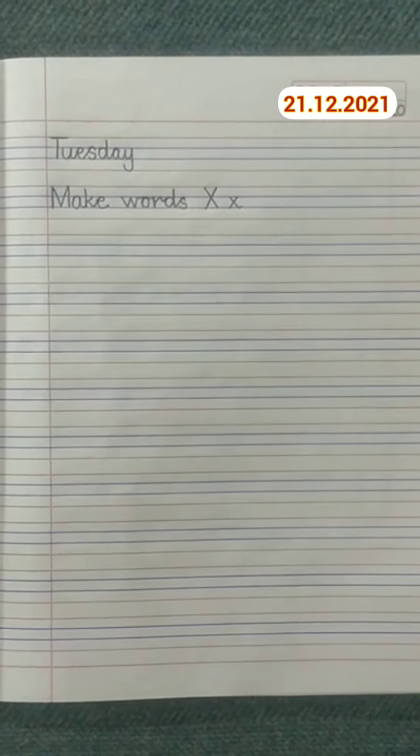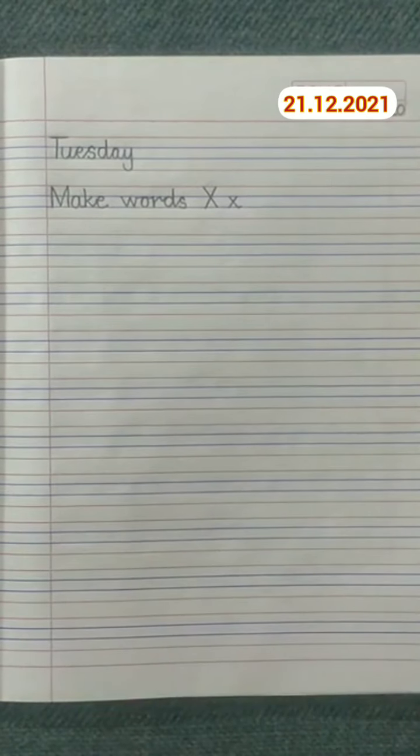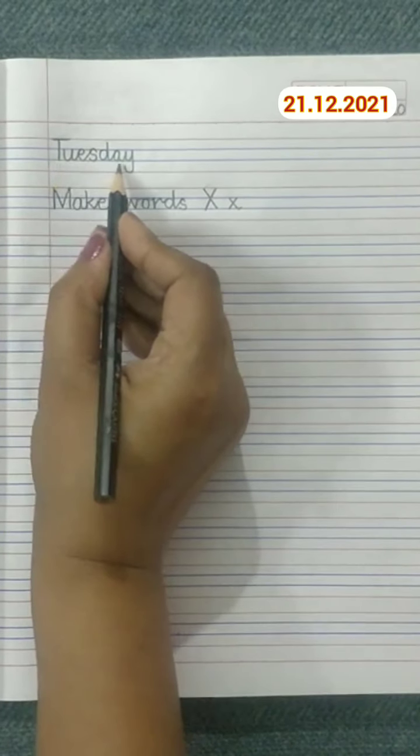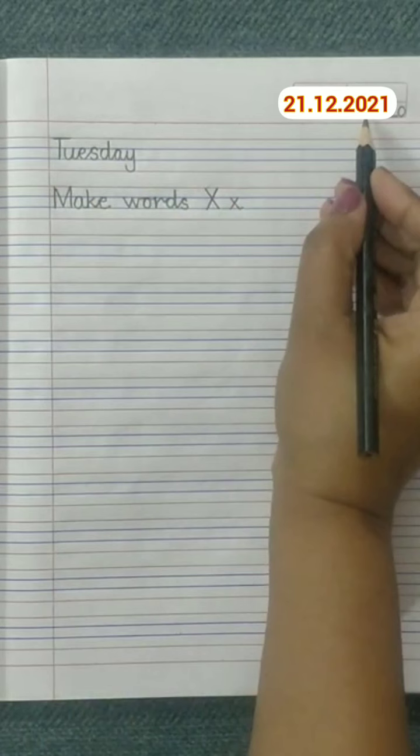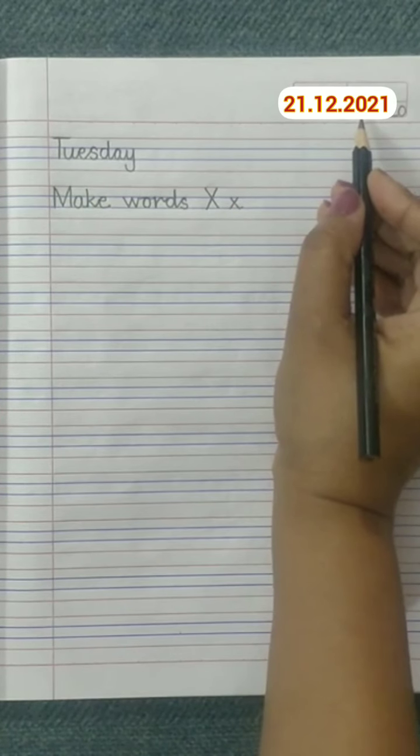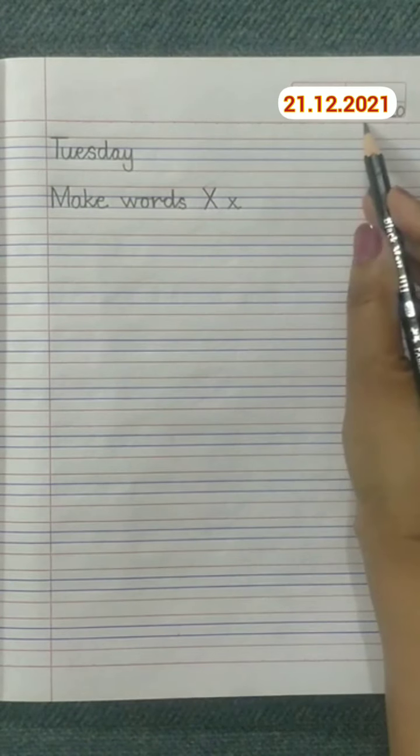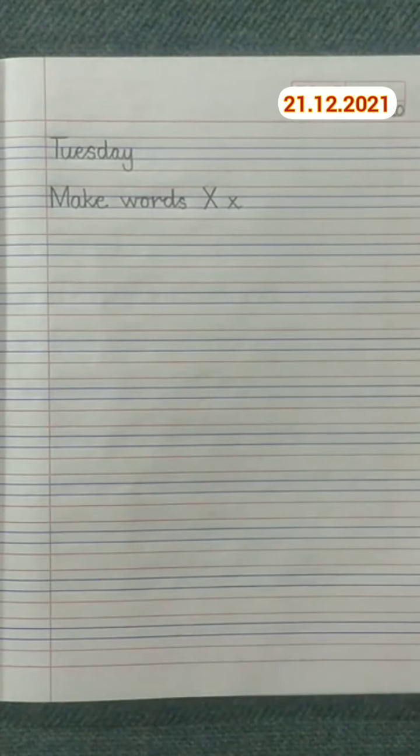Good morning children, how are you? Take out your English notebook. Near the margin line, write down Tuesday. Here on this corner you will write down the date: today is 21.12.2021.